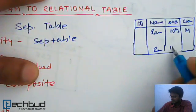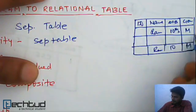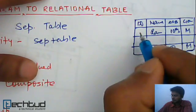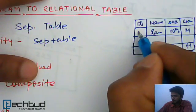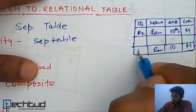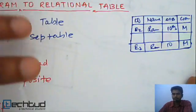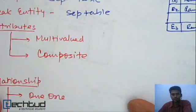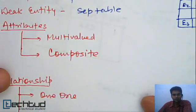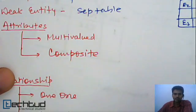In the weak entity table, two weak entity records can have the same attribute values, but the associated strong entity ID will be different — for example, employee IDs E2 and E7. So you have to create a separate table for the weak entity.